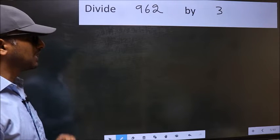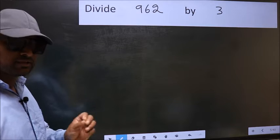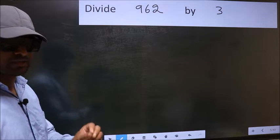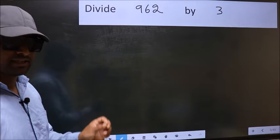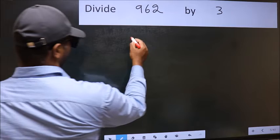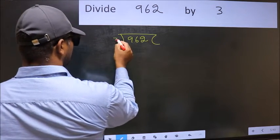Divide 962 by 3. While doing this division many do this mistake. What is the mistake that they do? I will let you know but before that we should frame it in this way. 962 by 3 here.